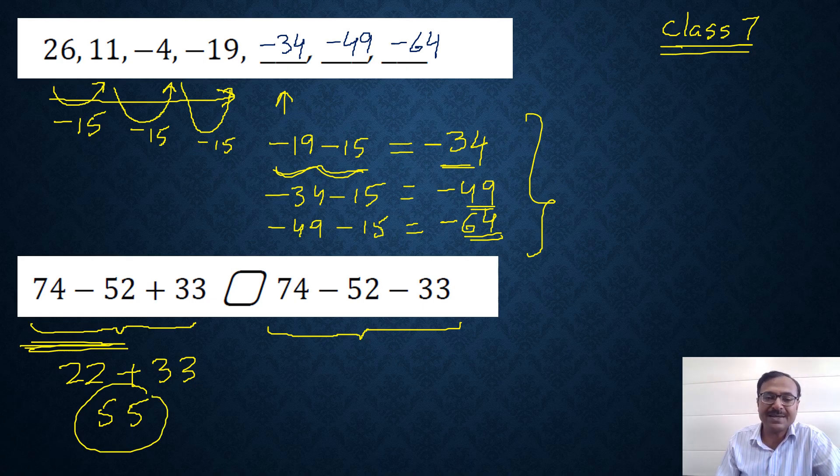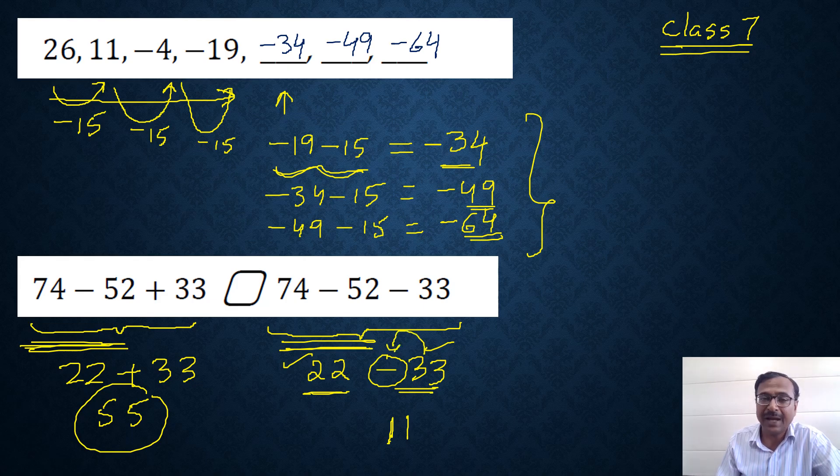How about the right hand side? 74 minus 52 is again 22, and then minus 33. A positive and a negative integer, you will have to subtract. 33 minus 22 is 11, and you always put the sign of the larger integer. Since 33 is greater than 22, the result is negative 11. 55 is greater than minus 11, so you put the greater than sign in the box.